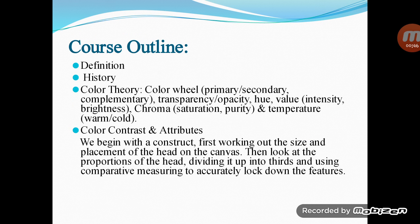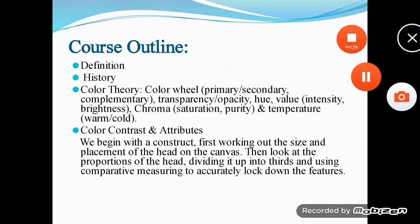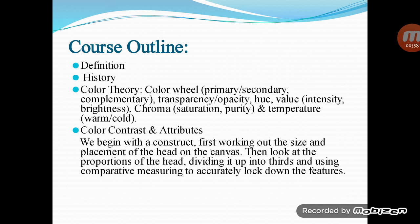Course Outline: Definition, History, Color Theory, Color Wheel — Primary, Secondary, Complementary, Transparency, Opacity, Hue, Value, Intensity, Brightness, Chroma, Saturation.